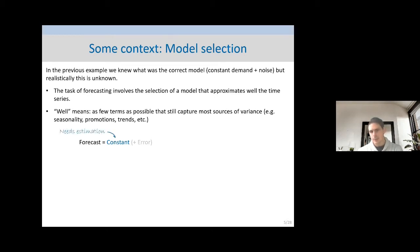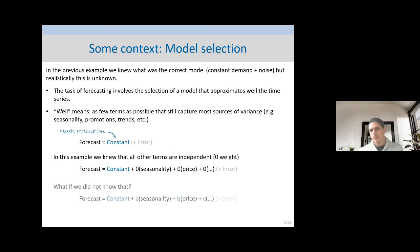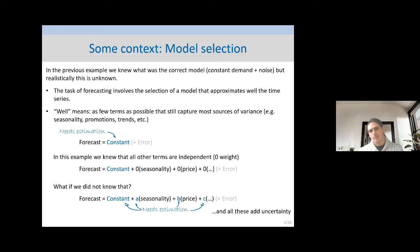Going back to the previous example, the model we had was just a constant with some error. That model could be written as having other terms — temperature, price, and so on — all given zero weight. If we didn't know that for a fact, we'd have to work with a model including the constant and different parameters for each component, all of which would need to be estimated. Each estimation carries uncertainty. The bigger the model, the bigger the uncertainty in the estimators. A good model is economical in terms because the more terms I add, the more uncertainty I have.